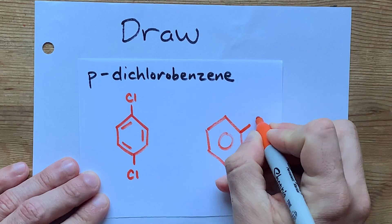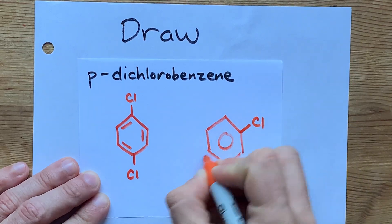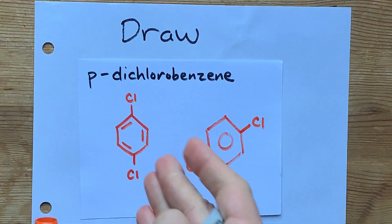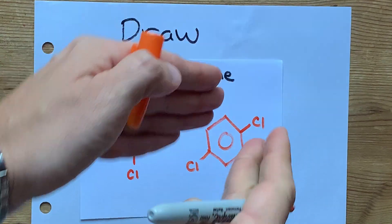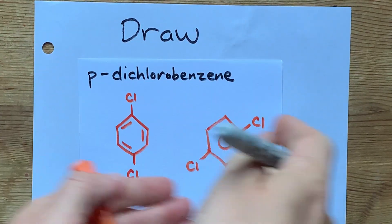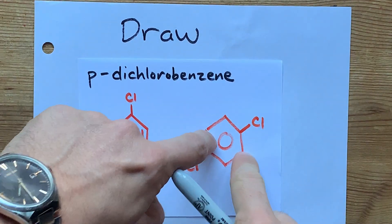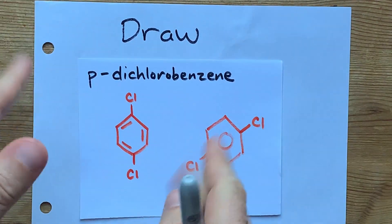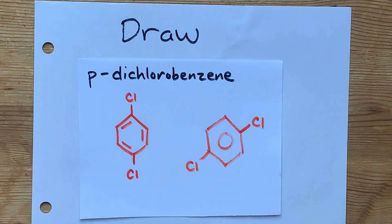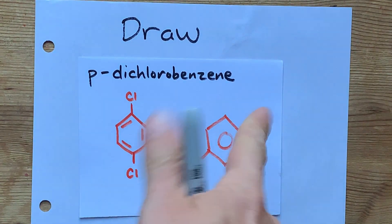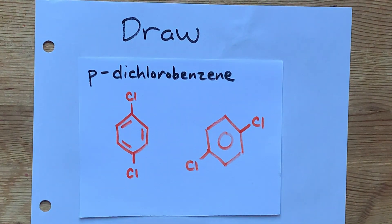You're also allowed to have picked other pairs of carbons — these are the exact same molecule. If you rotate it 60 degrees, you get the same molecule. Congratulations, you just drew para-dichlorobenzene. Thanks for being with me, and best of luck.